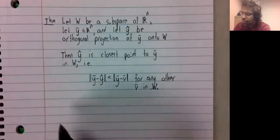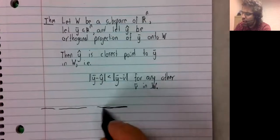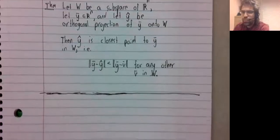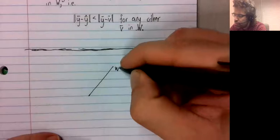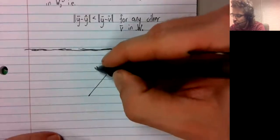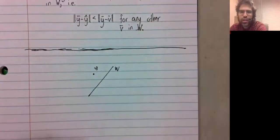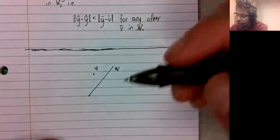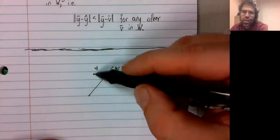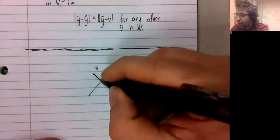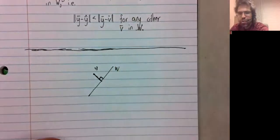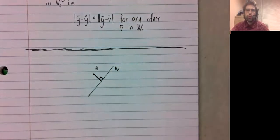And this should gel with our intuition. So if we have W and we have Y not in W, then the shortest path from Y to W is if you go straight from Y to W. And that is the orthogonal projection.